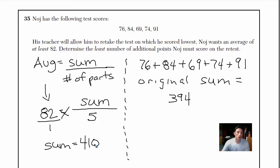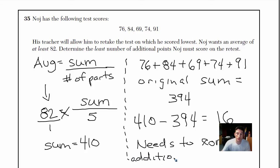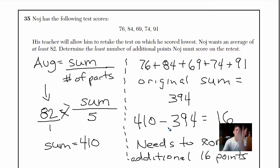To get an 82 average, he needs his scores to add up to 410. Right now they add up to 394. So when he retakes the test he scored 69 on, he needs to score an additional 410 minus 394, which gives 16. He needs to score an additional 16 points. We're just using the average formula — we know he wants an 82, he's taking five tests, we find the required sum and subtract the current sum.